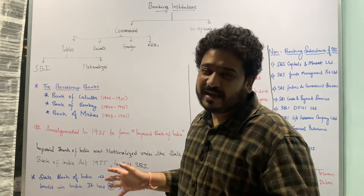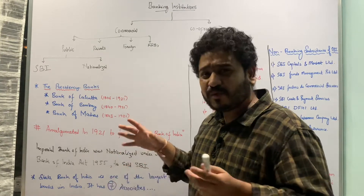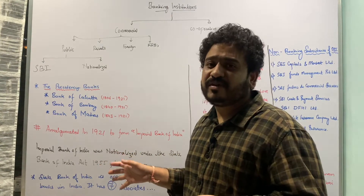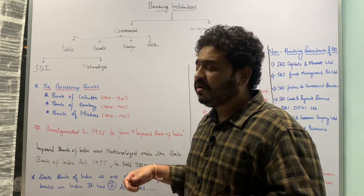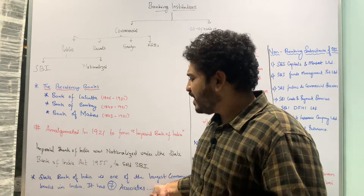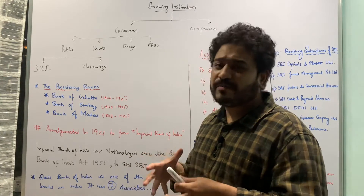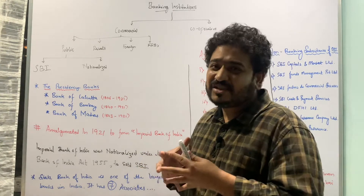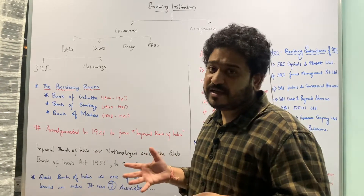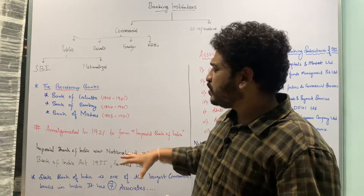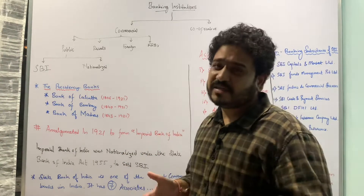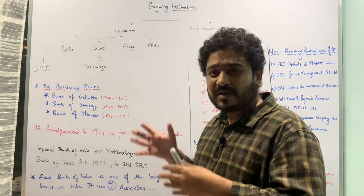The State Bank of India is the largest commercial bank in India and one of the largest commercial banks in the world. This bank is a consortium — a collection of different associates as well as subsidiaries. Let us look in greater detail at who the associate banks of the State Bank of India are and what its different subsidiaries are.